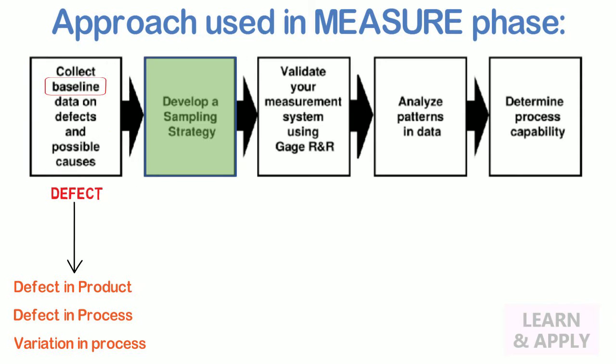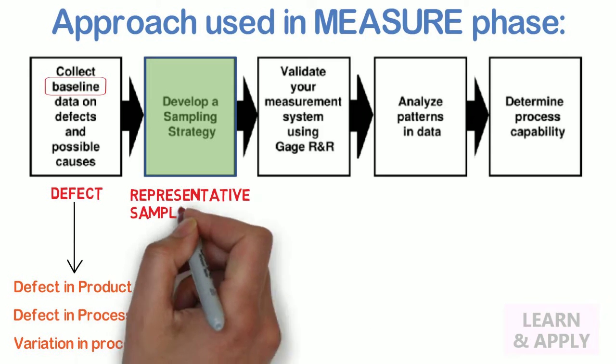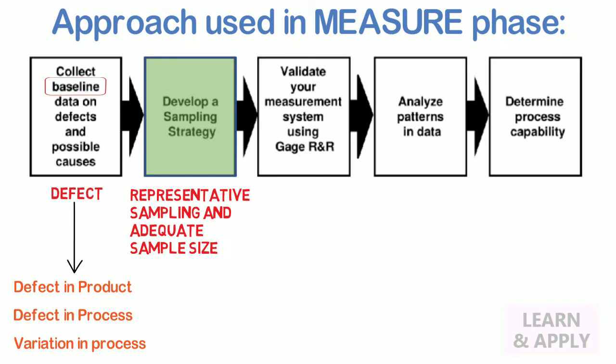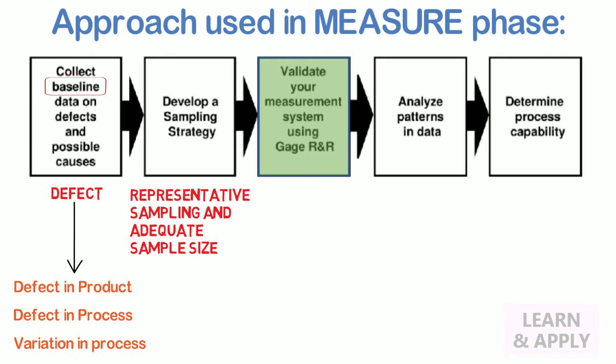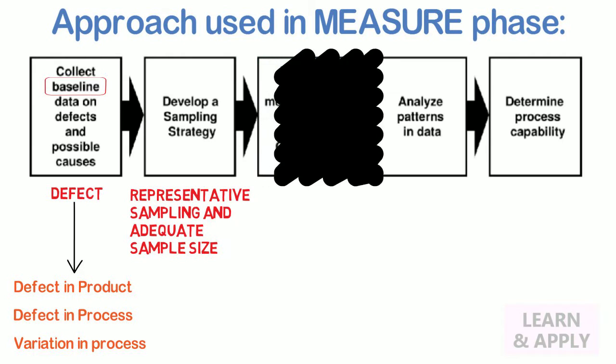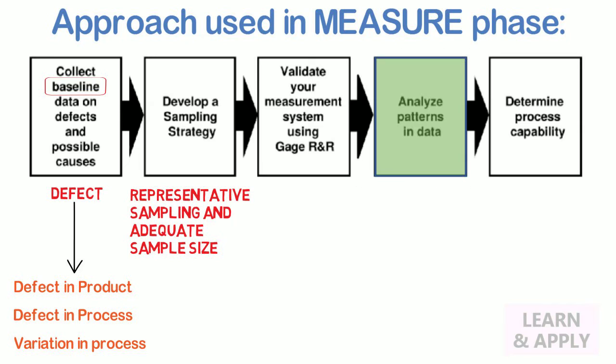In the next steps, we develop a sampling strategy to ensure we have representative sampling and adequate sample size. This is followed by validating our measurement system using Gage R&R. Once we complete validation of our measurement system, we see the patterns in the data and determine its as-is process capability.